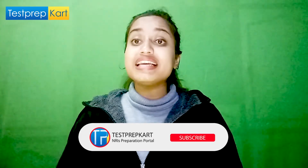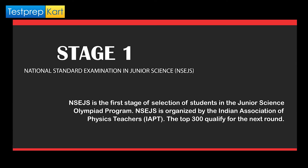Now, an important question: how can an Indian student participate in IJSO? It is not an easy task — you need to go through a very systematic process to represent India at the international level in the Junior Science Olympiad. The selection process for IJSO in India consists of five stages. Stage one is the National Standard Examination in Junior Science, which is NSEJS, organized by the Indian Association of Physics Teachers. The top 300 students qualify for the next round.